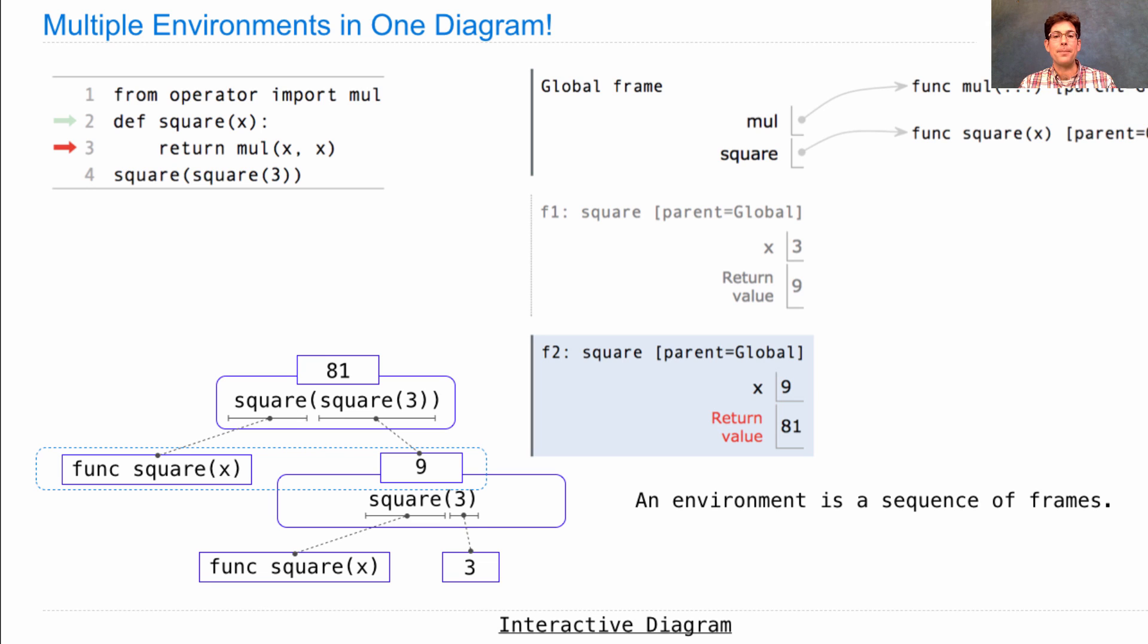So, in this diagram, we have multiple environments. An environment is a sequence of frames. So far, it's just the global frame alone, or a local frame and then the global frame. These parent annotations tell you where the next frame in an environment is. So, let's see if we can find all the environments in this diagram. There's one. There's a second one, which is this local frame followed by its parent, the global frame. And there's a third one, this local frame followed by its parent, the global frame. There's no environment that includes all three frames at the same time.